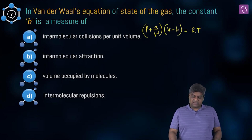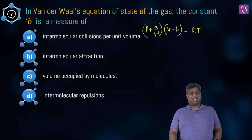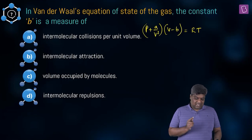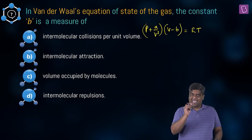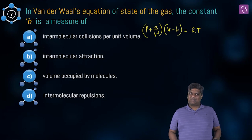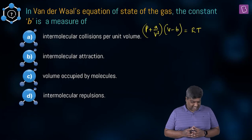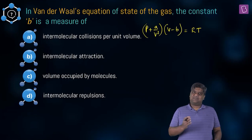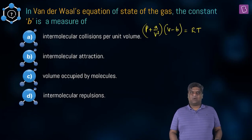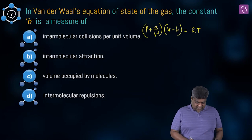Looking at the options: option A, intermolecular collisions per unit volume — wrong; option B, intermolecular attraction — that is represented by a, not b; option C, volume occupied by the molecules — correct; option D, intermolecular repulsions — incorrect. So the correct answer is option C.